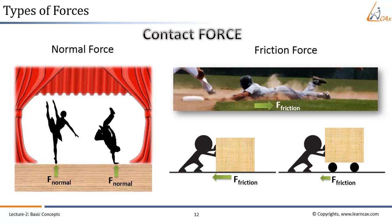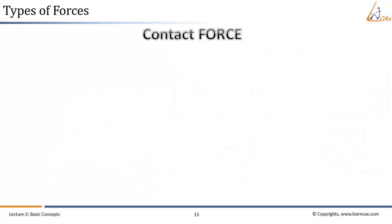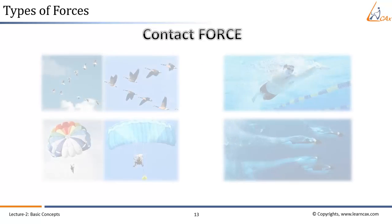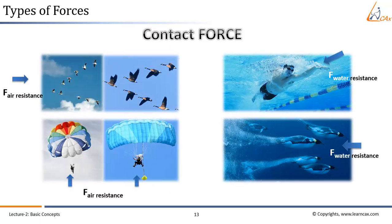The interaction doesn't always need to be between two solid objects. The interaction can also be between a solid object and its surrounding fluid. The fluid resistance is a special type of frictional force that acts on objects as they travel through the fluid. The force of fluid resistance is often observed to oppose the motion of the object. Fluid includes both gases and liquids. Most common examples are objects moving in air and water.